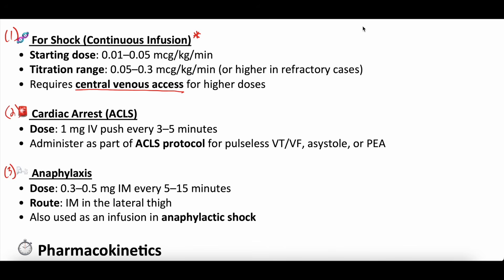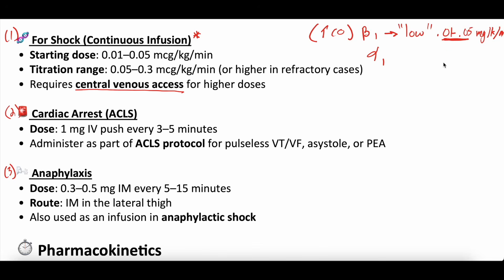Different doses of epinephrine have primarily beta-1 versus primarily alpha-1 effects. Lower doses — around 0.01 to 0.05 micrograms per kilogram per minute — primarily have that beta-1 effect, increasing cardiac output. So if you're starting epinephrine just for something like bradycardia, you'd set it at one of these lower doses. You don't want to titrate it up because the beta-1 effect then turns more into an alpha-1 effect — vasoconstriction — which just increases mean arterial pressure.